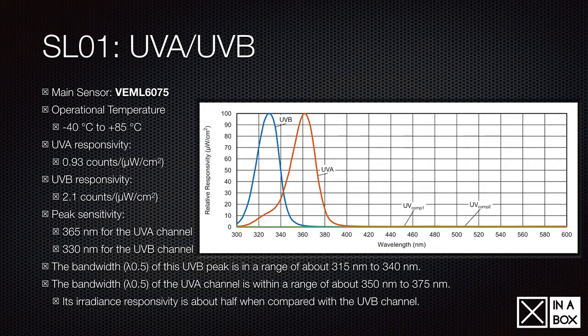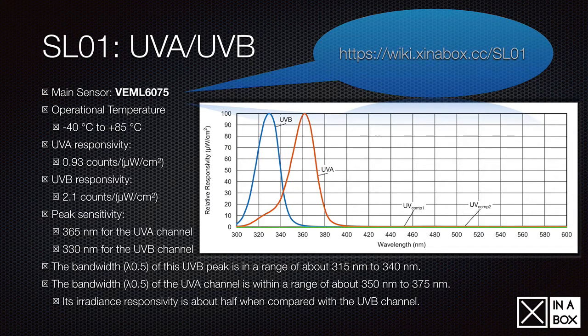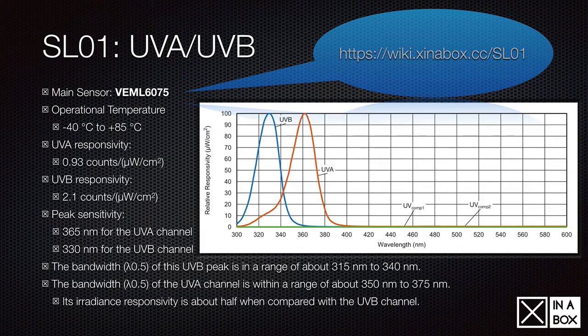Let's look at the SL01 on the UVA and UVB. First of all, you can see here it says the sensor is a VEML6075. And if you want to know more, then you can always go to the wiki, wiki.xinabox.cc/SL01. You can do the same with the CC03 if you want to program that. It tells you how you program it in Arduino. And, of course, you can do it with all the other sensors. SL19, SW10, OD01, all the different X-chips. You can go in there and get more details.